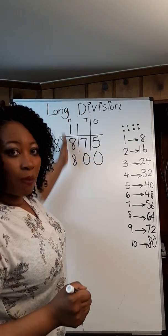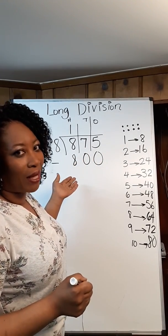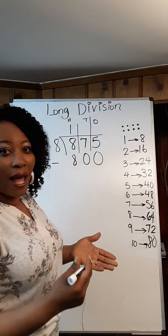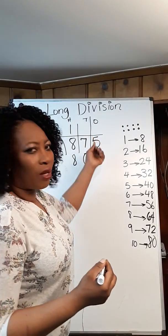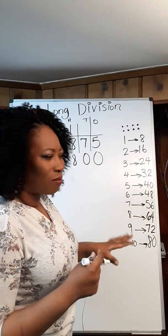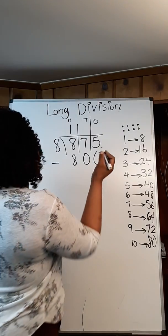Because we're working with the hundreds place, it makes sense to subtract 800. Now we're going to just subtract. For students who often forget to bring the numbers down or get confused, this method is perfect. Very nice.